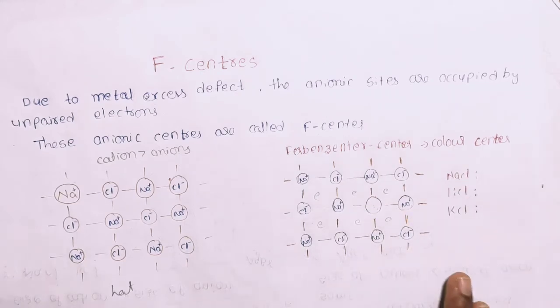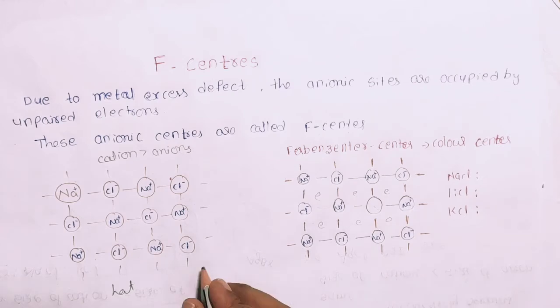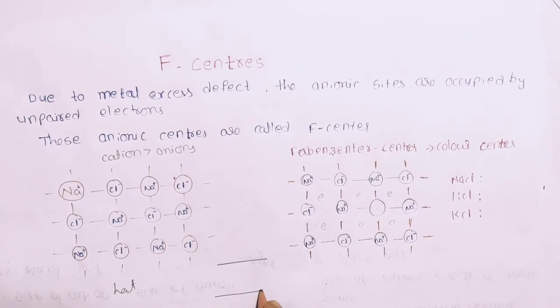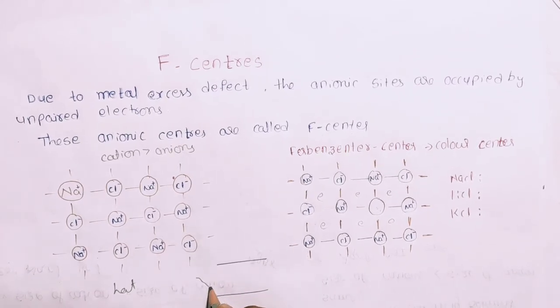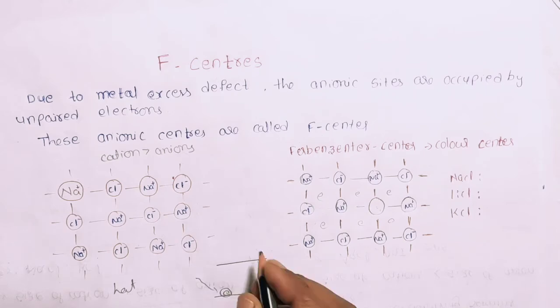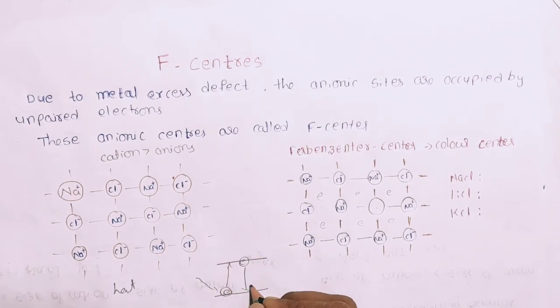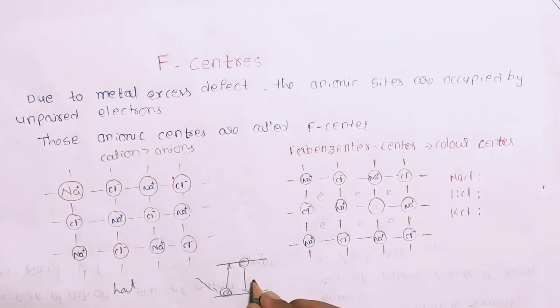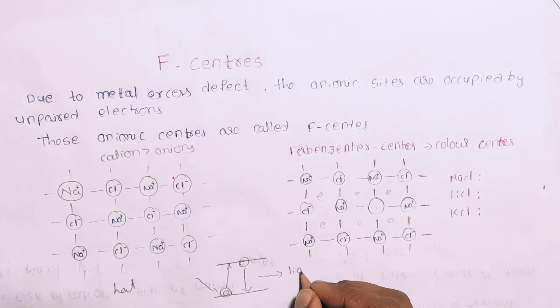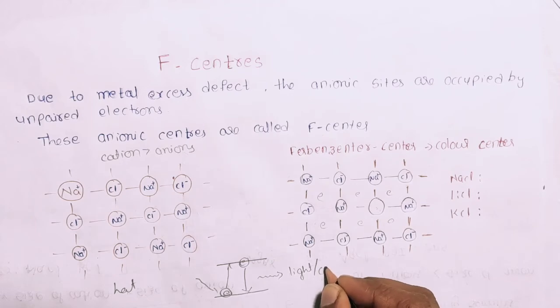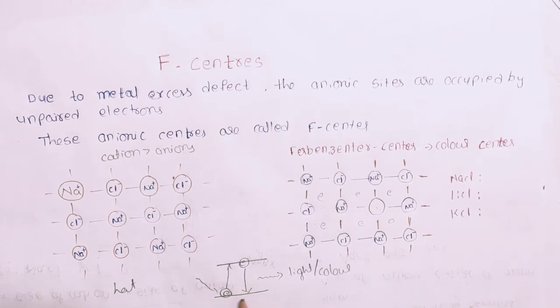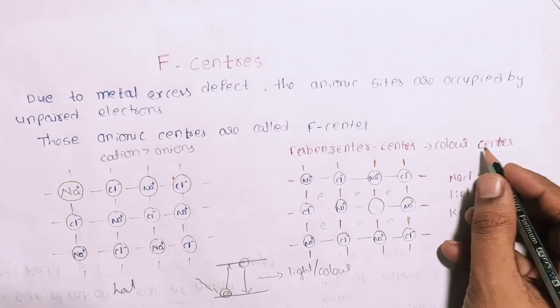Color center: the electron in the transition absorbs energy from ground state to higher level, then returns from the higher level. This energy is released in the form of light. This is the color. The electron exhibits color.